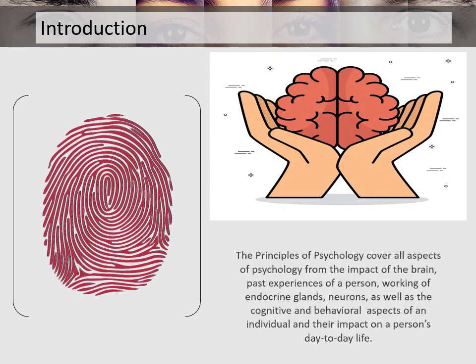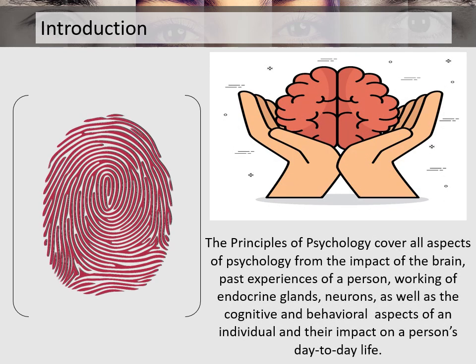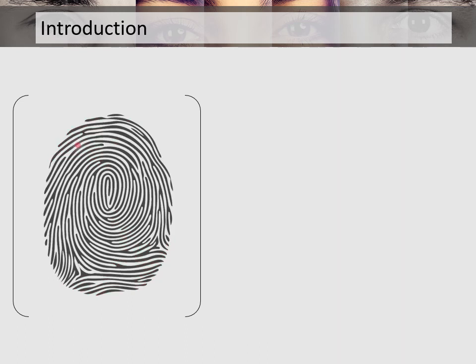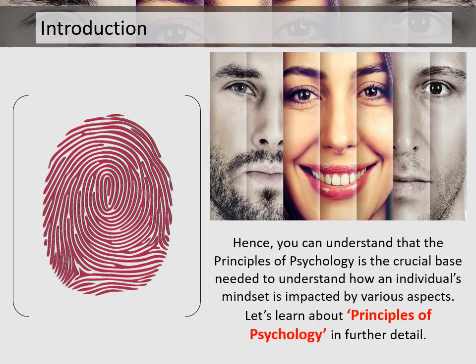The principles of psychology cover all aspects of psychology from the impact of the brain, past experiences of a person, working of endocrine glands, neurons, as well as the cognitive and behavioral aspects of an individual and their impact on a person's day-to-day life. Hence, you can understand that the principles of psychology is the crucial base needed to understand how an individual's mindset is impacted by various aspects. Let's learn about principles of psychology in detail.